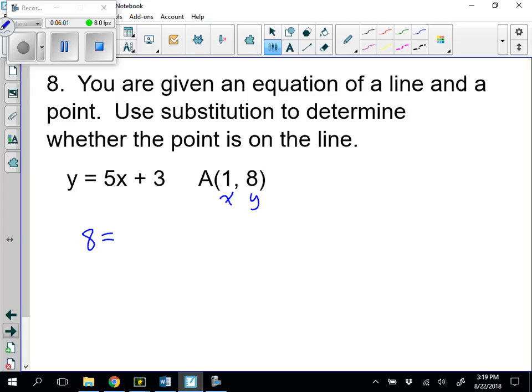So I'm going to have 8 equals 5 times the X value plus 3. If I get the same number on the left as I do on the right, then that means the point is on the line. So I've got 5 plus 3 is 8. So therefore I have just shown the point is on the line. So we're dealing with geometry, but algebra we did a lot with lines. So this is an algebraic way to check that out.